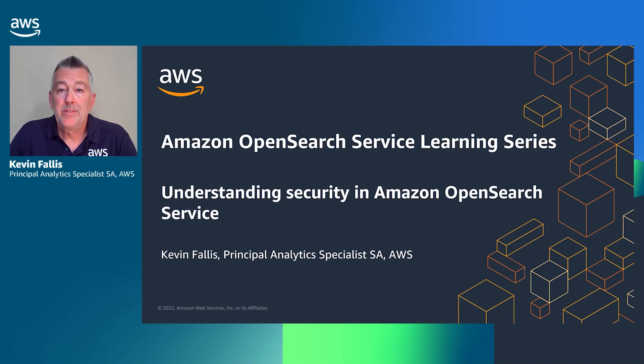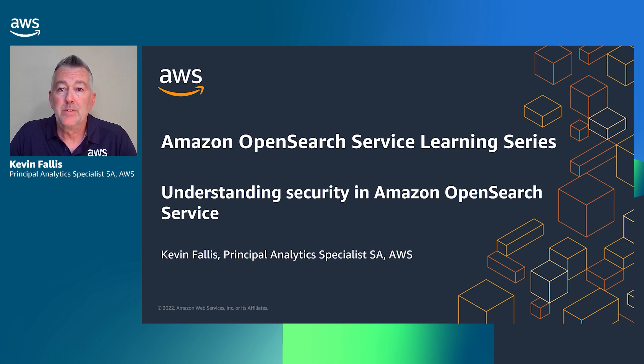Welcome. My name is Kevin Fallis. I'm a Principal Analytics Specialist Solutions Architect and I work with the Amazon OpenSearch service to help customers such as yourself understand the feature sets.